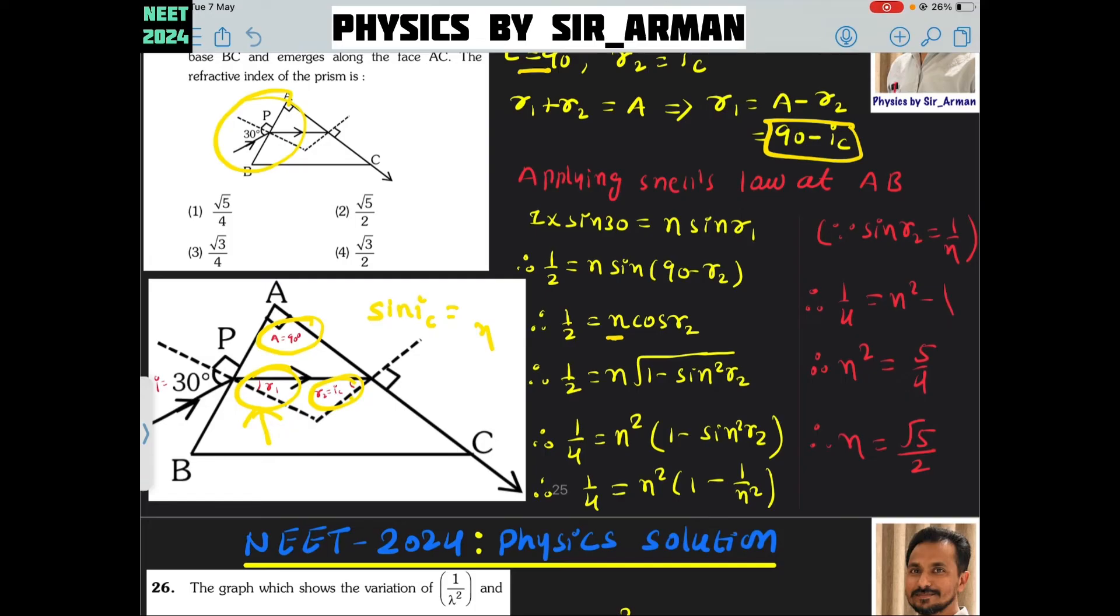What we are doing is sine square theta is 1 by eta squared. Sine theta is 1 by eta because sine ic, where ic is r2 is the critical angle, and for that critical angle we can write sine ic equals 1 by eta. Here sine square r2 is 1 by n square. Multiply this inside, it becomes n square minus 1 equals 1 by 4. Just rearrange, you will get refractive index equals root 5 by 2.